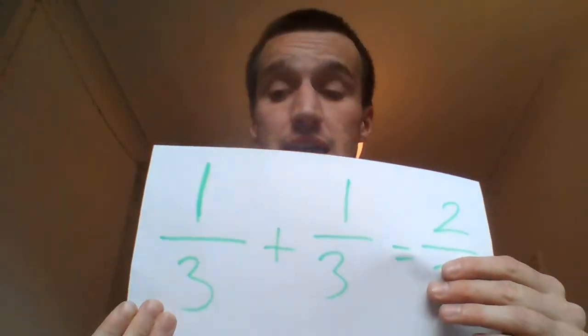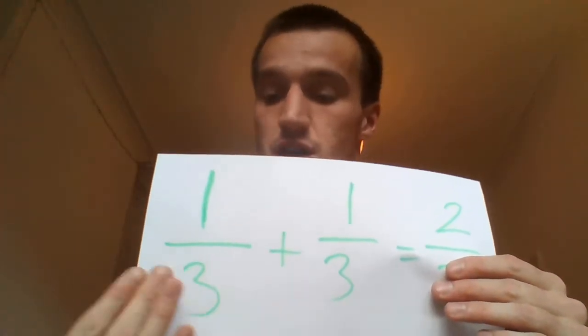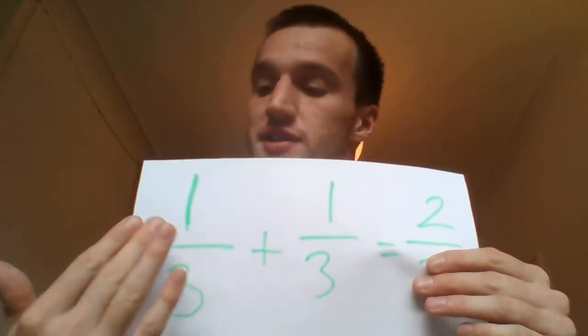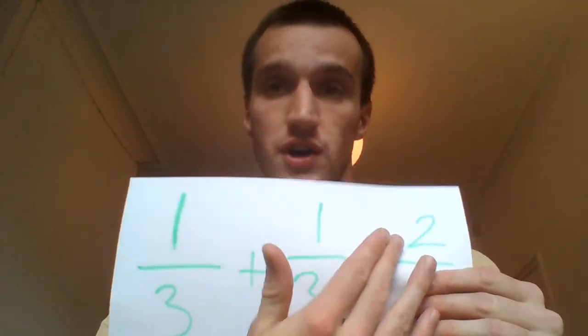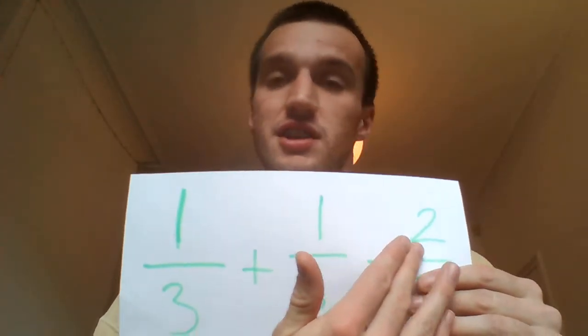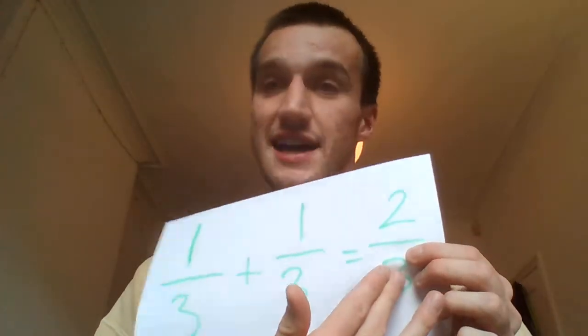However, there is some logic to this. Take a case where both denominators are the same, say a third and a third. You can see here, by adding one and one on the top, does equal two, and this is satisfied. The misconception here is you can't just add two fractions the same way without first finding a common denominator.